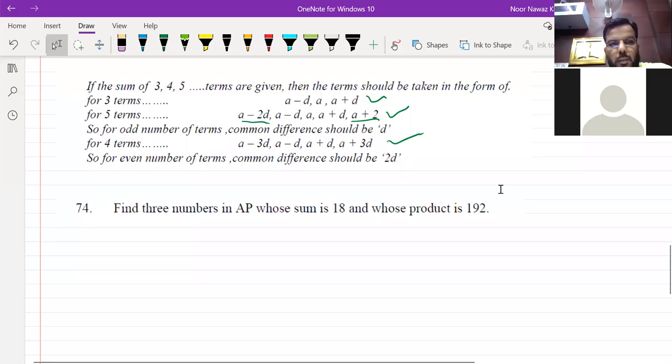This is the formula of terms that I have written you, that when the sum of 3 or 5 or 4 or 6 terms is given in AP, we will suppose the terms in a different way so the question will be easy to solve.